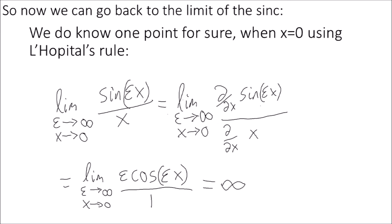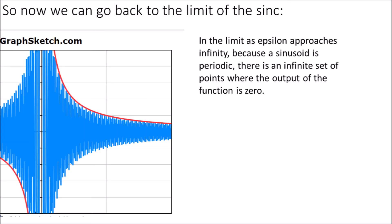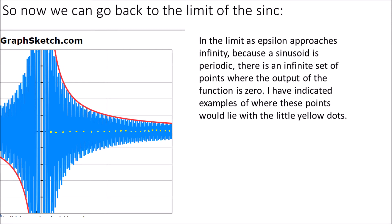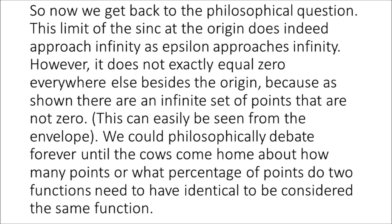Now we can go back to the limit of the sinc. We know one point for sure: when x equals 0 using L'Hôpital's rule. For simplicity, infinity times 0 is 0 and cosine of 0 is 1. We can clearly see from the graph that the limit approaches infinity when x equals 0 and epsilon gets larger. In the limit as epsilon approaches infinity, because a sinusoid is periodic, there is an infinite set of points where the output of the function is 0 — indicated by yellow dots. There is also another infinite set of points where the function output value is not 0 — indicated by red dots.